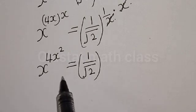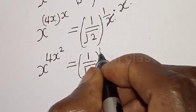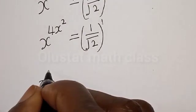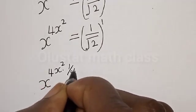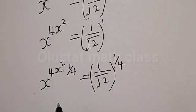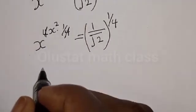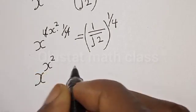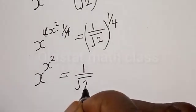Now let's divide the exponents of both sides by 4. Remember that here x is also raised to power 1. Then we have x raised to power 4x squared multiplied by 1 over 4, raised to power 1 divided by 4. This 4 will cancel, leaving x raised to power x squared.